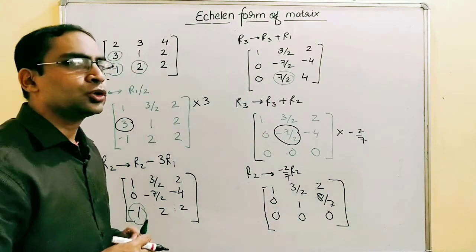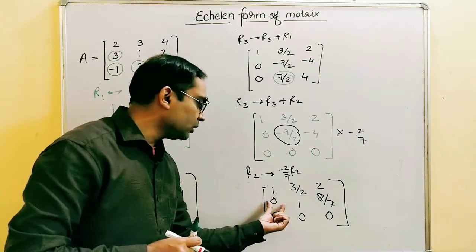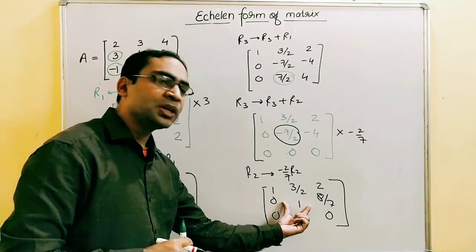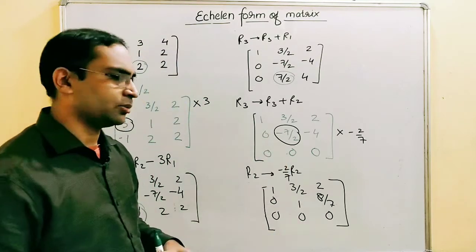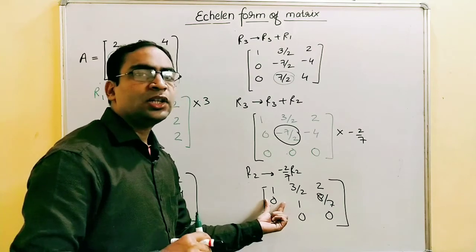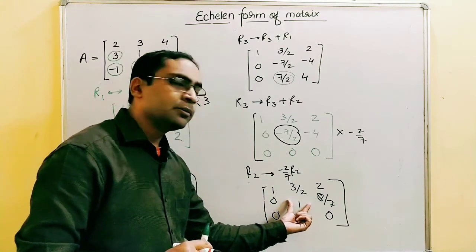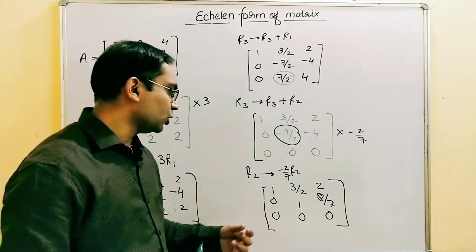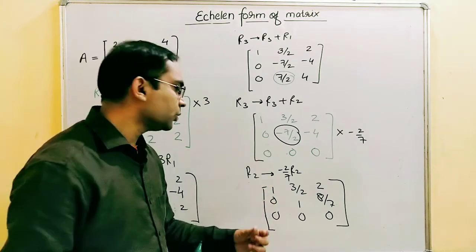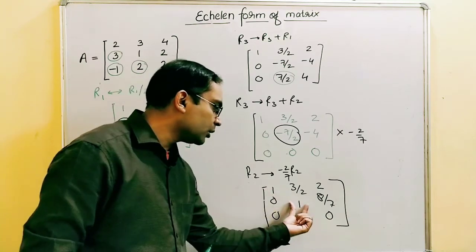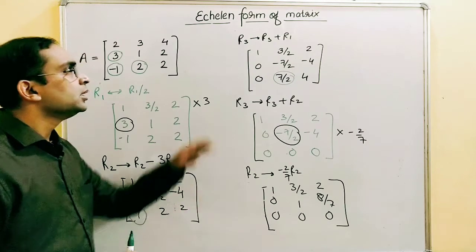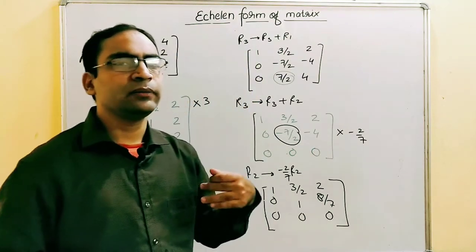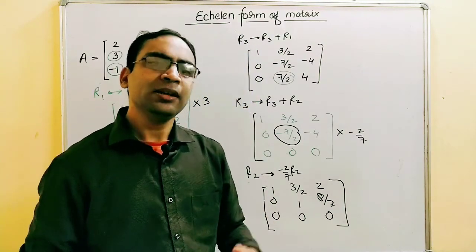Now we check all three rules of echelon form. Rule one: all non-zero rows precede zero rows — satisfied, as rows one and two are non-zero and row three is the zero row. Rule two: the number of leading zeros increases in each successive row — satisfied. Rule three: the first non-zero element in each row is unity — here it is one and here it is one, so satisfied. This matrix is in echelon form. In the next lesson we will talk about the normal form of a matrix. Thank you.